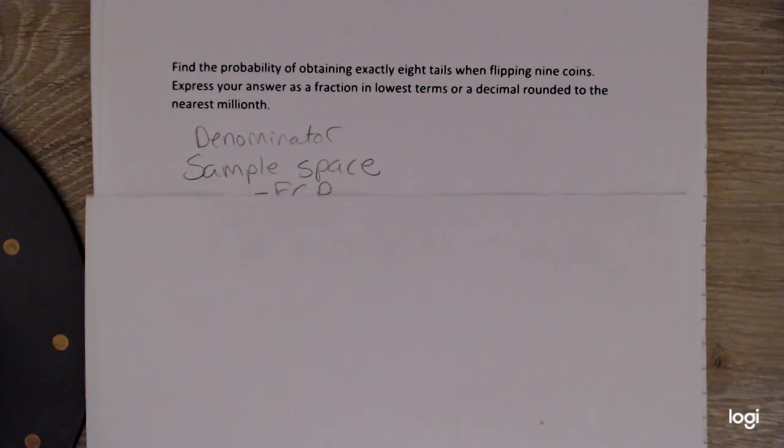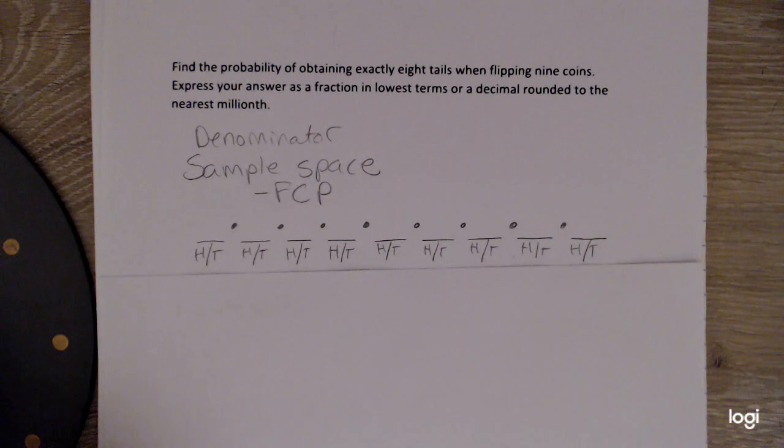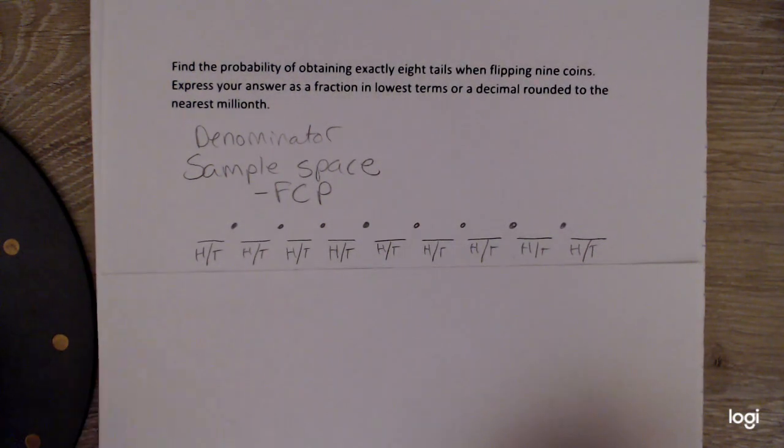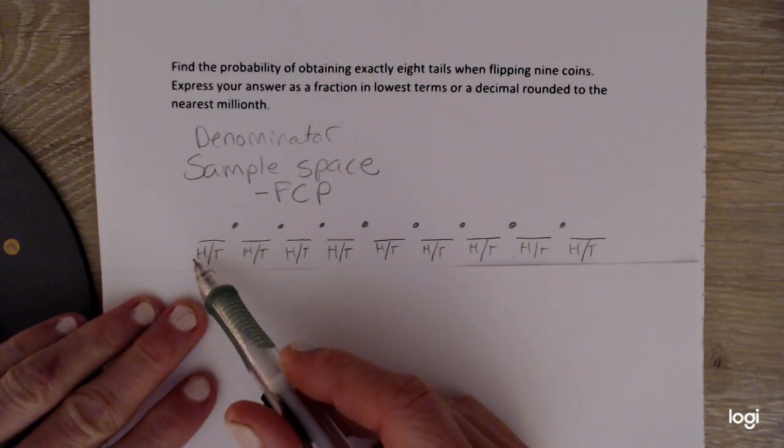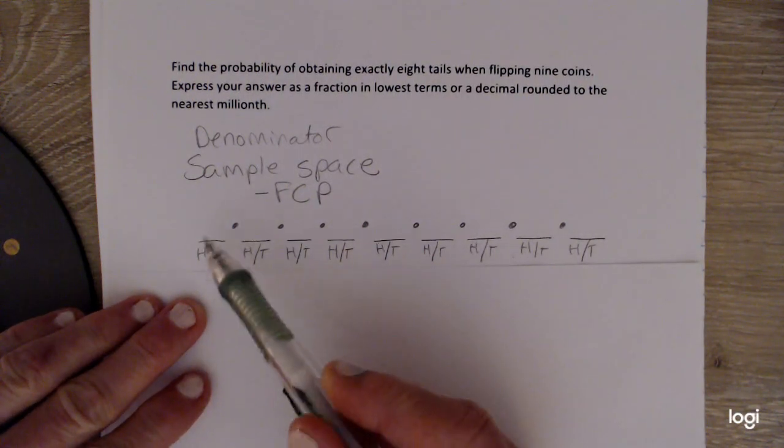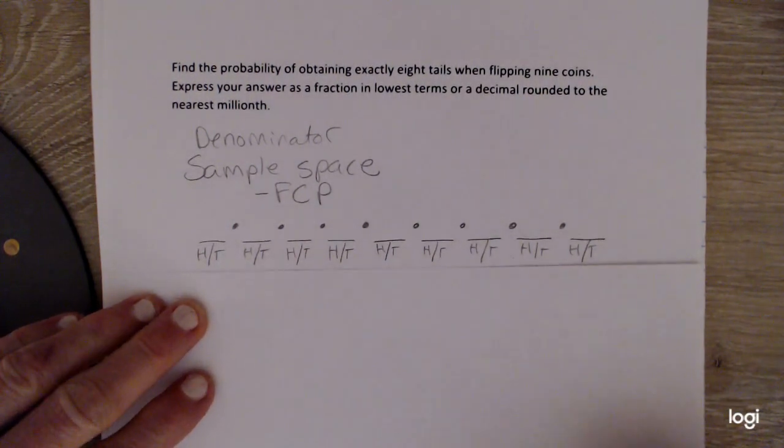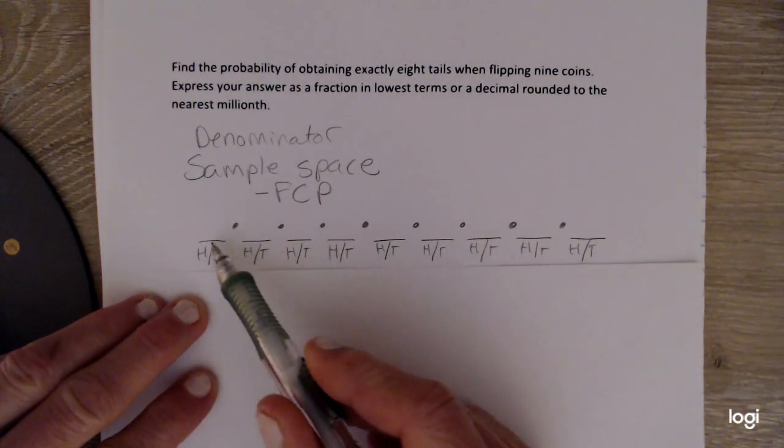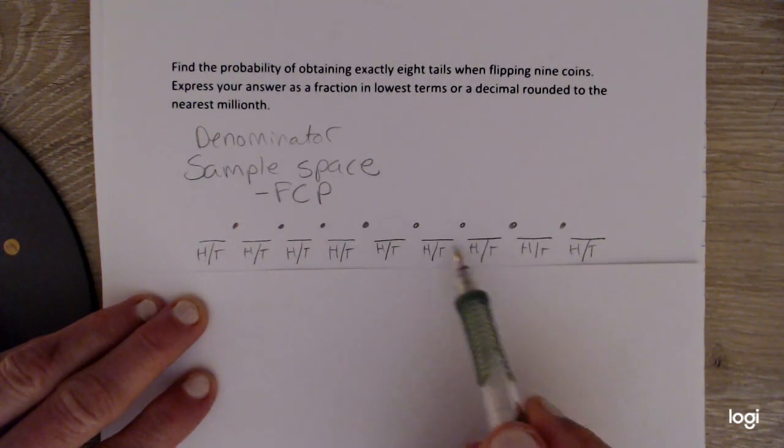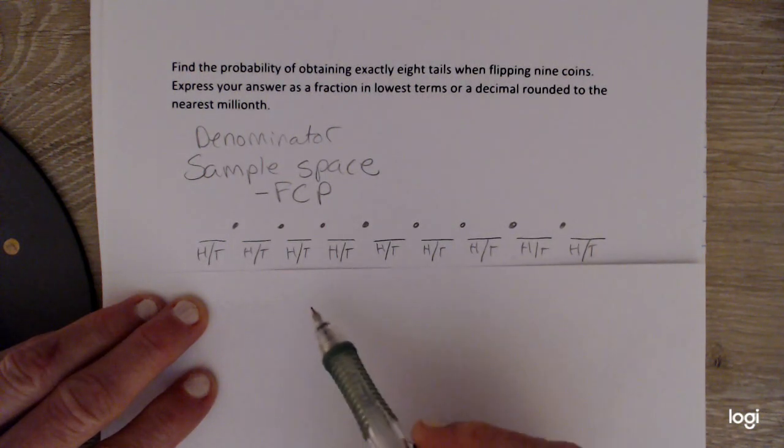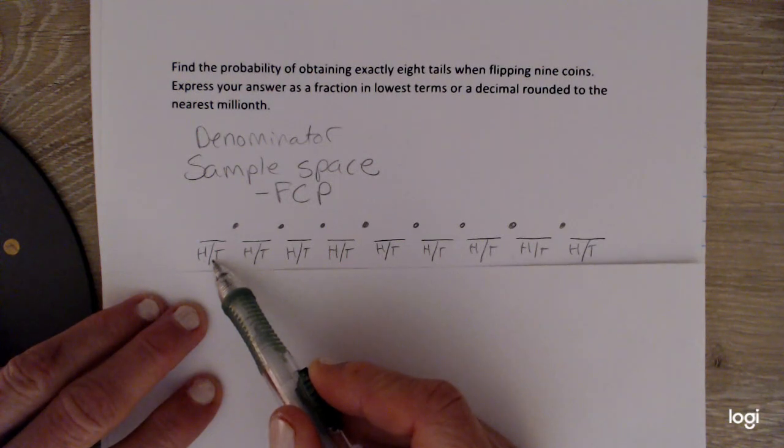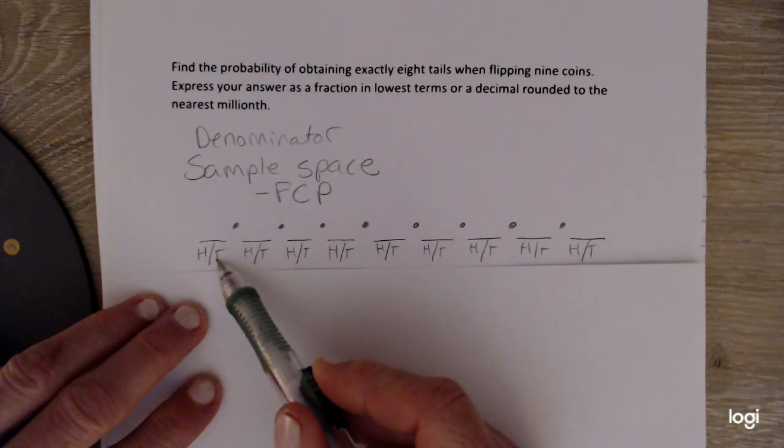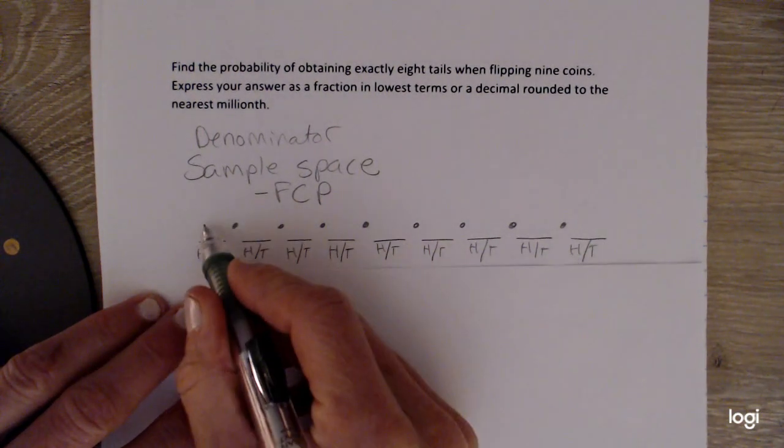So the Fundamental Counting Principle basically says that the number of ways that events can occur in sequence can be found by multiplying straight across how many ways each individual event can occur. So I went ahead and drew little slots for each event. And each event would be an individual flip. So for this first event, flipping the coin the first time, I have two outcomes, heads or tails.